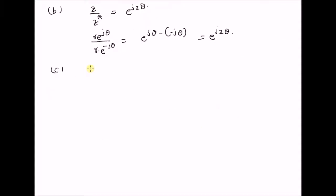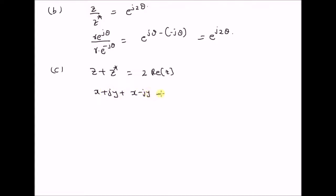The next property is that the sum of a complex number with its conjugate is equal to 2 times the real part of the complex number. By definition, the LHS becomes x plus jy plus x minus jy, which is equal to 2 times x, and x is the real part of the complex number z. So this is equal to 2 times the real part of complex number z.